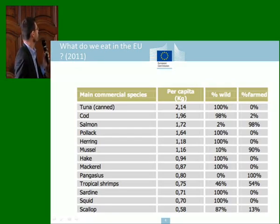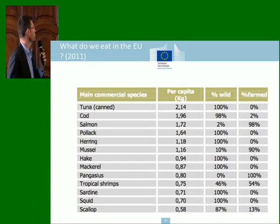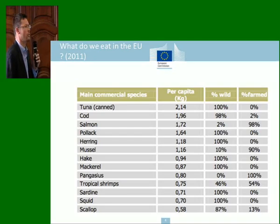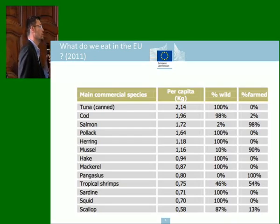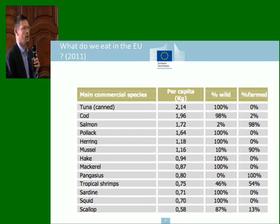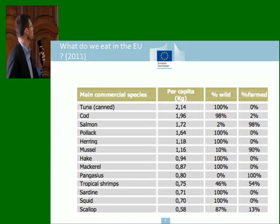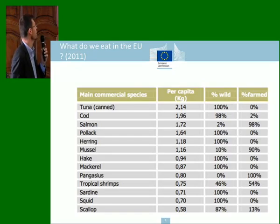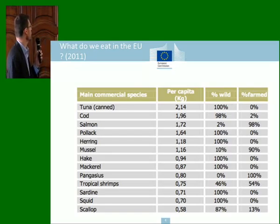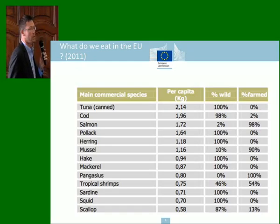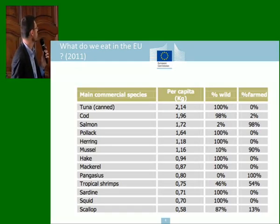We eat a lot of things, but tuna, cod, and salmon are the top three. We did some work — all this data extracted from publications done with Eurofish — trying to go further and identify within EU consumption what share is coming from aquaculture and what is coming from the wild. It is quite clear that except for some specific species like salmon and pangasius, we are very much into wild products.